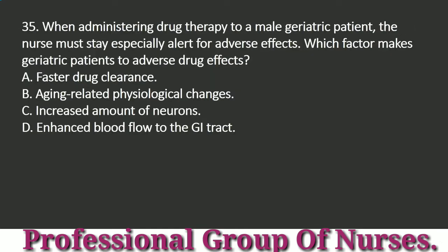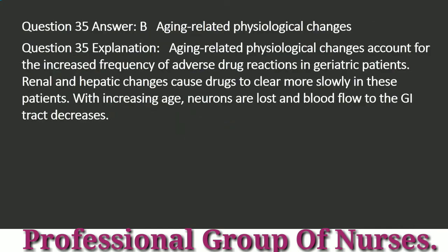Question 35: When administering drug therapy to a male geriatric patient, the nurse must stay especially alert for adverse effects. Which factor makes geriatric patients susceptible to adverse drug effects? a. Faster drug clearance. b. Aging-related physiological changes. c. Increased number of neurons. d. Enhanced blood flow to the GI tract. Answer: b. Aging-related physiological changes. Explanation: Aging-related physiological changes account for the increased frequency of adverse drug reactions in geriatric patients. Renal and hepatic changes cause drugs to clear more slowly in these patients. With increasing age, neurons are lost and blood flow to the GI tract decreases.